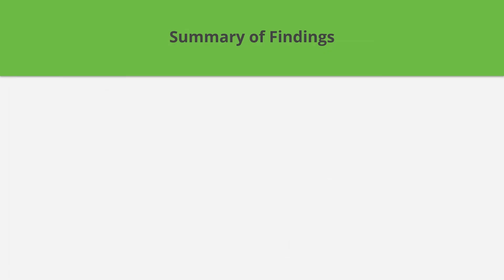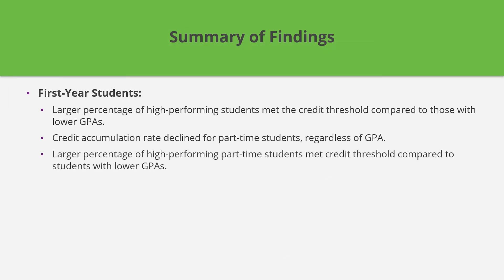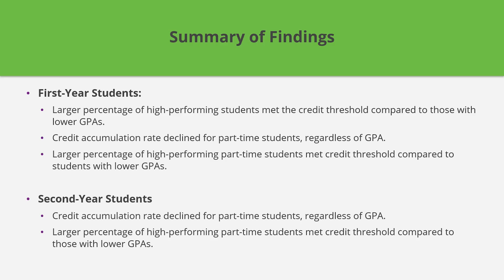Let's summarize what we learned through this exploration. For first-year students, we found that a larger percentage of high-performing first-year students met the credit threshold compared to students with lower GPAs. We also found that, regardless of GPA, credit accumulation rate declined for part-time students. Part-time students with higher GPAs were more likely to meet the credit threshold compared to part-time students with lower GPAs. For students in their second academic year, the credit accumulation rate declined for part-time students regardless of their GPA, and a larger percentage of high-performing part-time students met the credit threshold compared to students with lower GPAs.